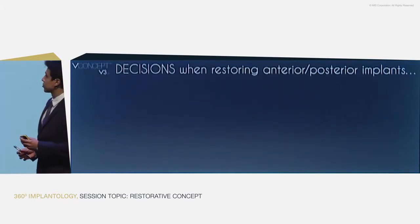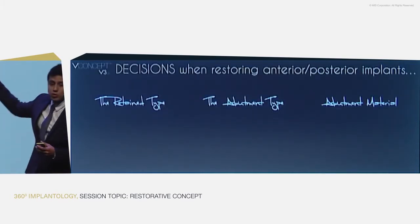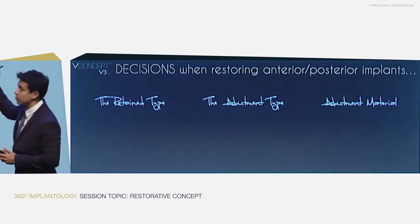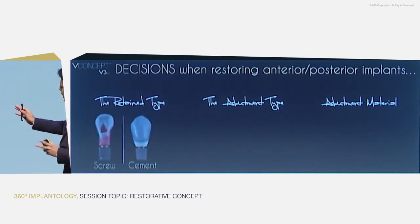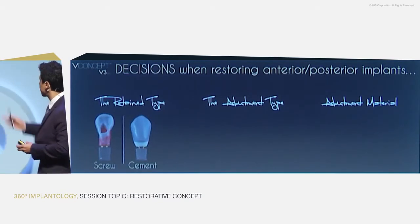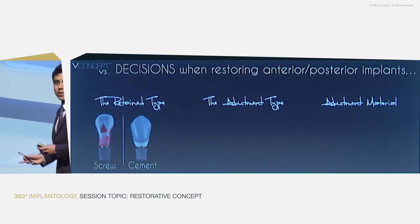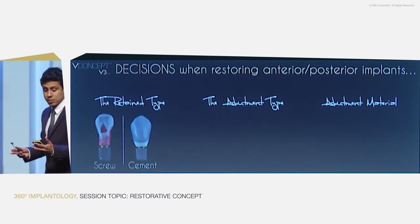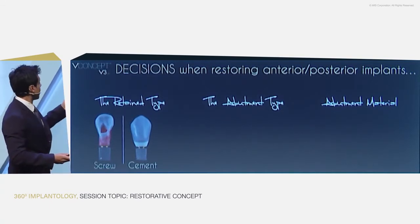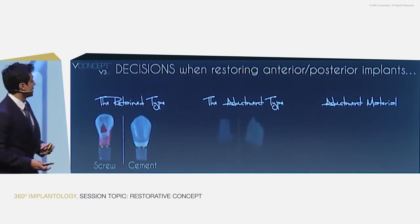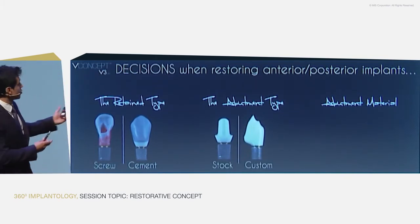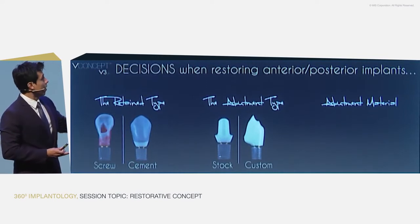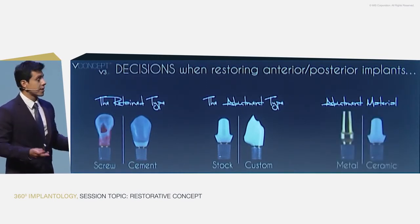I would like to introduce three concepts in the restorative part. We will talk about the retainer type, the abutment type, and the abutment material. We know that we have two choices in each topic: screw restorations versus cement, stock abutment versus custom abutment, and metal versus ceramic.